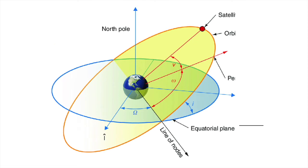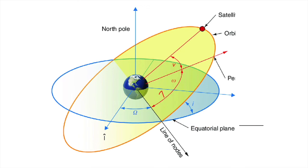A satellite with an eastward velocity component at the ascending node has an orbital inclination lying between 0 and 90 degrees. Such an orbit is called a prograde orbit. From the diagram, if the orbit is rotating in the eastward direction, it has an eastward component, so this type of orbit is called a prograde orbit. A prograde orbit has inclination between 0 and 90 degrees.